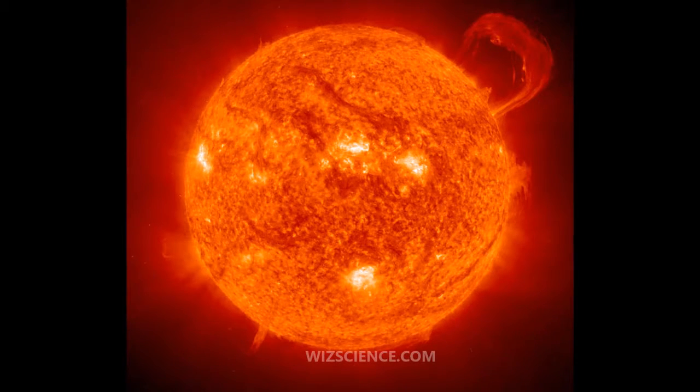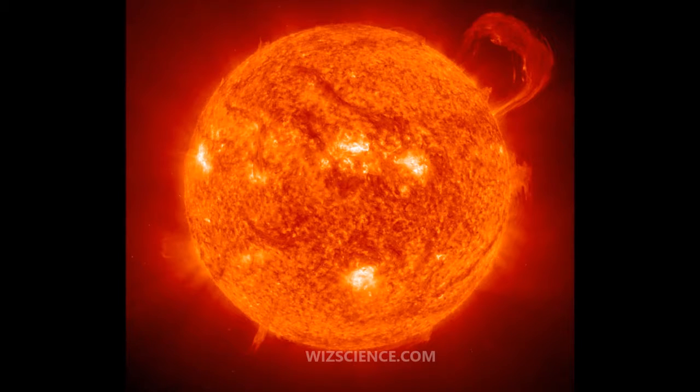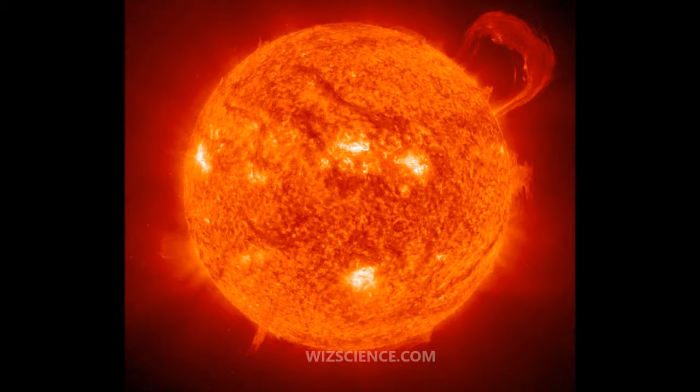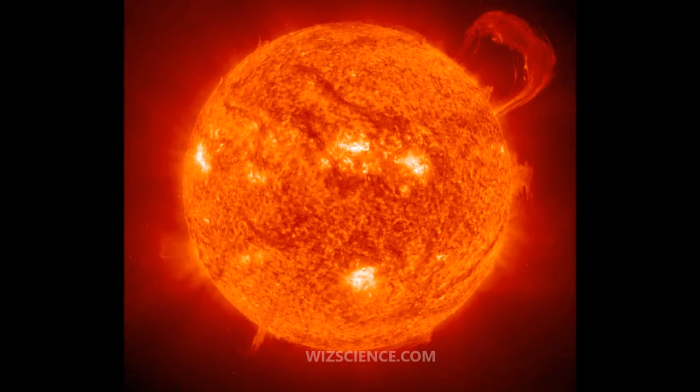Before mid-2010, EIT obtained an Fe-XII image of the sun about four times an hour, around the clock. These were immediately uplinked as time-lapse movies for immediate viewing by anyone who is interested.